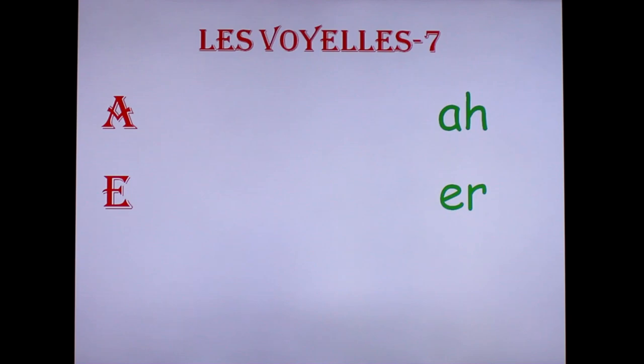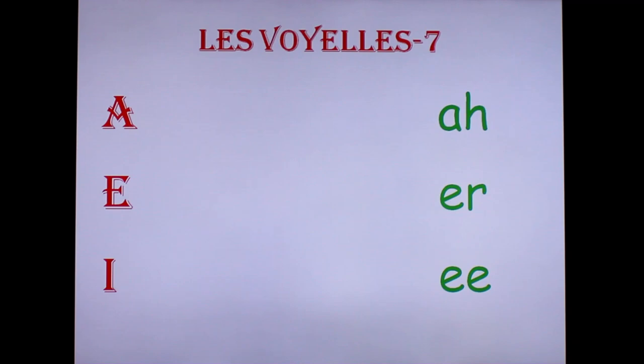The third vowel is I, which in French sounds as in the word 'ami' — the E sound — or 'lit' which means bed, or the word 'livre' which means the book. Then comes O. The word sounds as in 'le bureau' or we call it as 'trop' — 'trop' means too much.